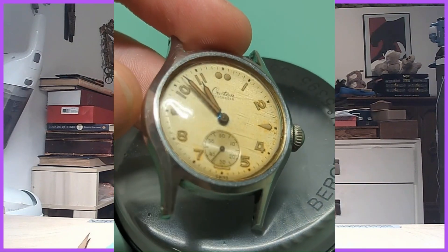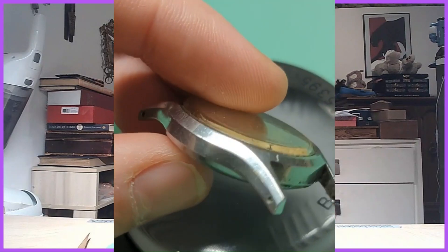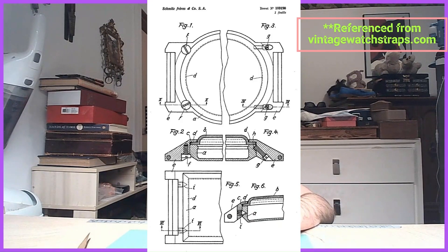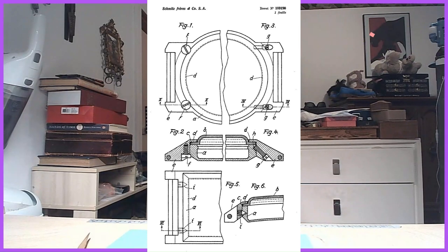This also featured a really neat feature called the clamshell case. If you're not familiar with it, it's similar to a more traditional wristwatch case but different. Most wristwatches have a snap-back or screw-on case back where the entire case back screws onto the rest of the case and bezel.